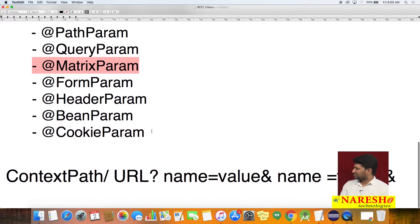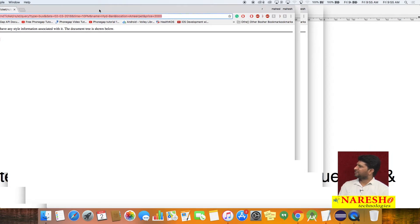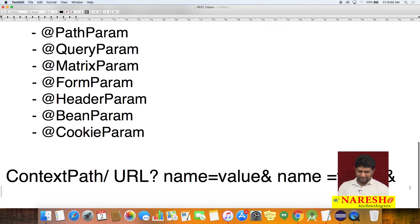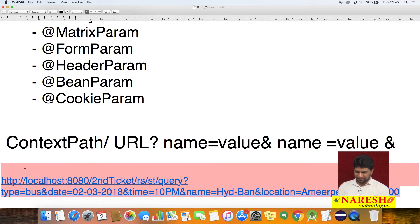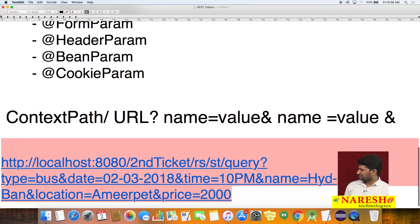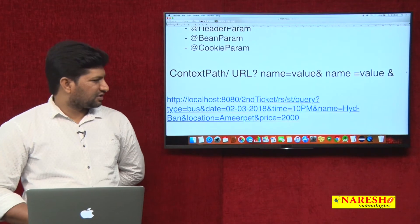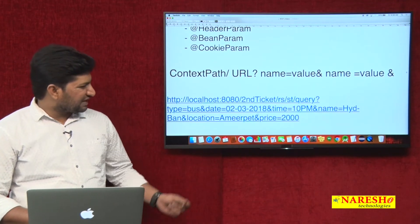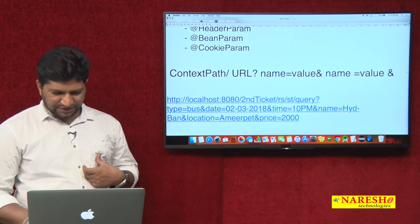To understand how matrix parameters work, let's look at the previous URL used for query parameters. The difference between matrix and query parameters is the delimiter: for query parameters, we use ampersand as the delimiter between parameter values.